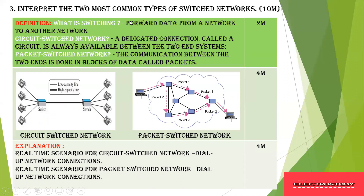The next question is: interpret the two most common types of switched networks. In the definition, switching is nothing but forwarding of data from one network to another with the help of a switch or hub. Switching is divided into circuit switched and packet switched. Circuit switched means there is a dedicated line between two routers or switches forming a circuit between two hosts. Packet switched means large data is divided into small packets and delivered to each host.